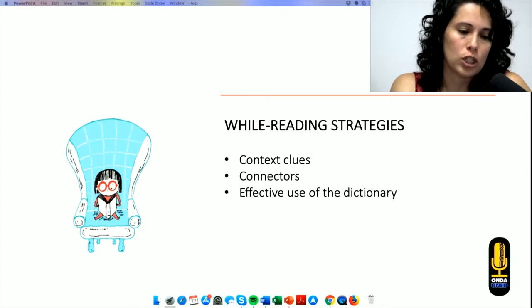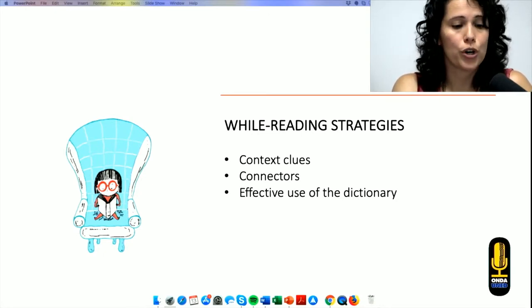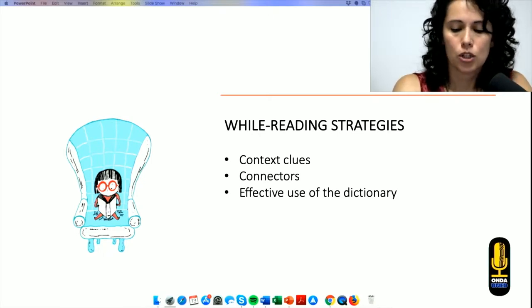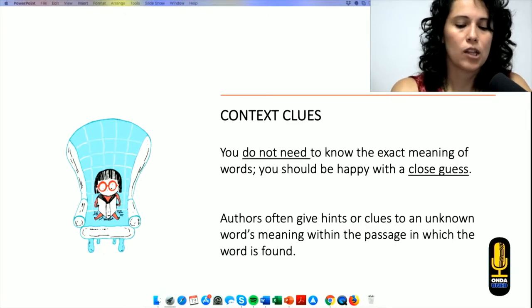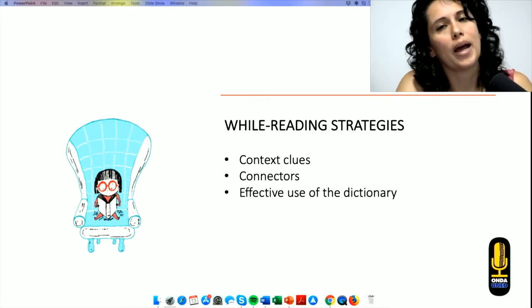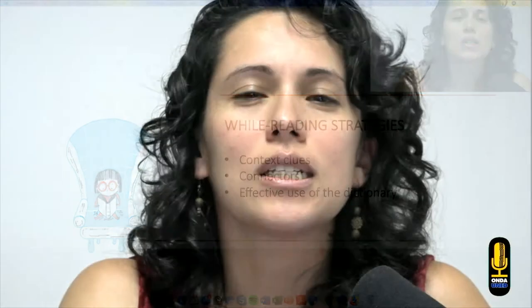Now let's move on to the while reading strategies. In this session, we're going to be talking about the first two: context clues and connectors. And then in our third session, we are going to be talking about the effective use of the dictionary. Let me tell you, before I show you this, I'm going to tell you a little story. I remember when I started as a language learner and I wanted to understand every single word I was reading from the book. I didn't understand a word and I went to the dictionary, look for the word and continue. But after 20 words, I was so tired. I didn't want to continue reading. I put the book away and didn't read.